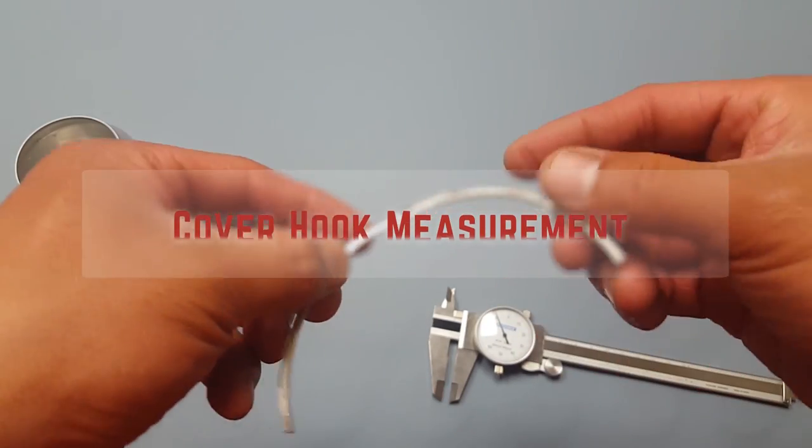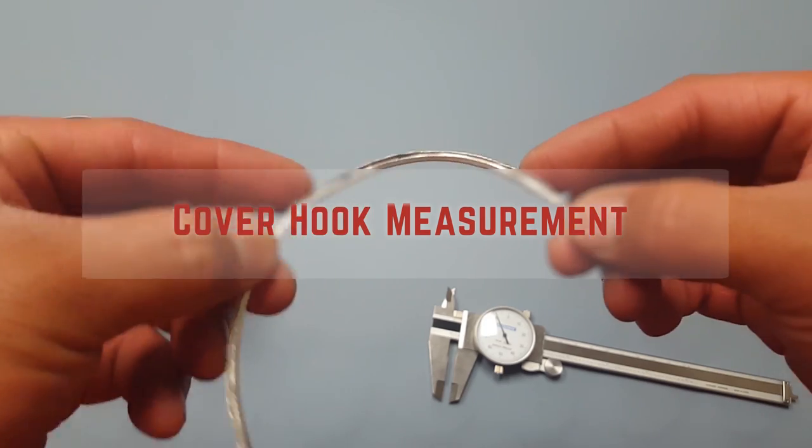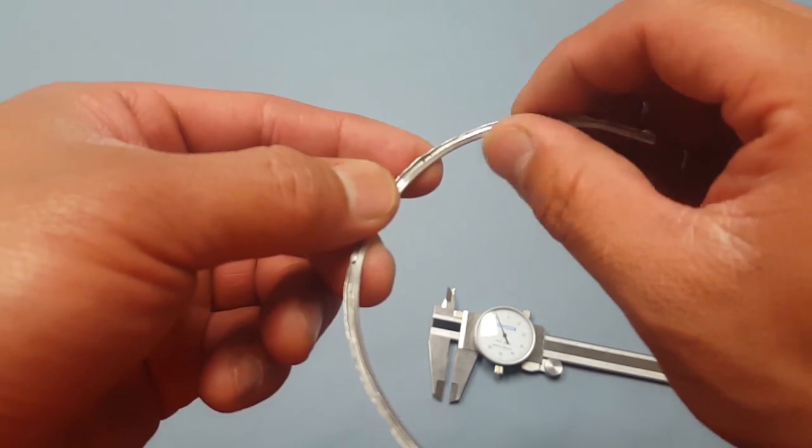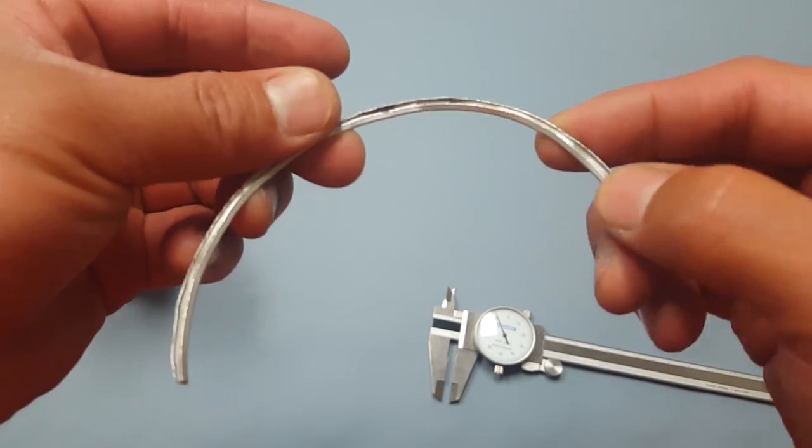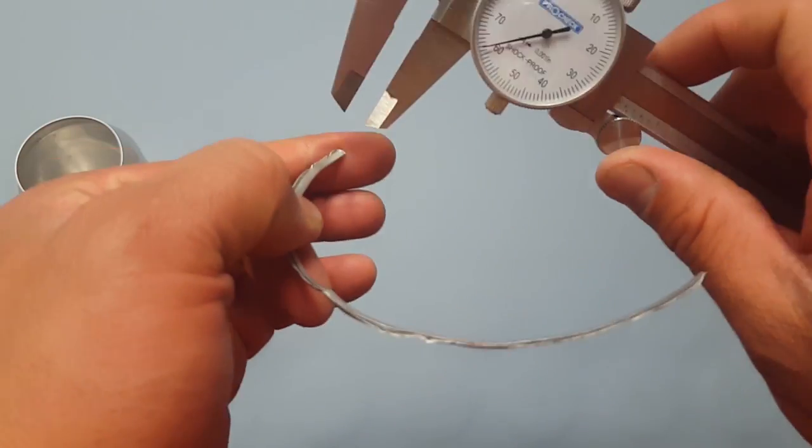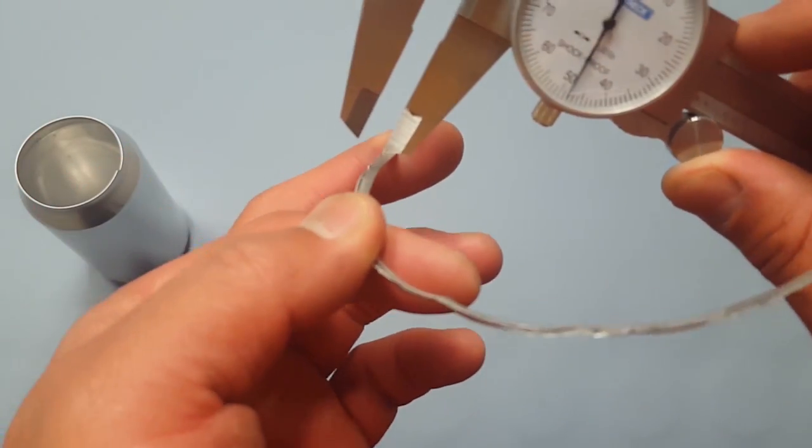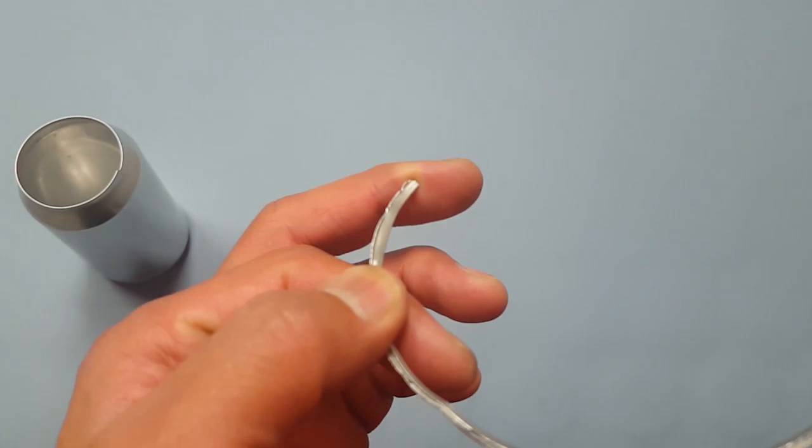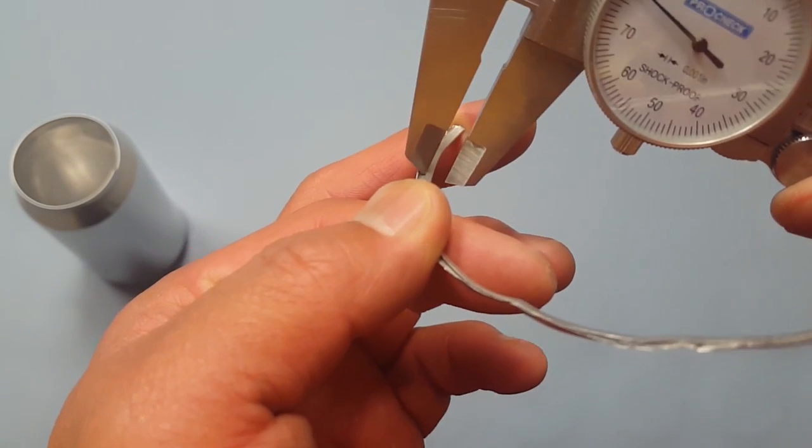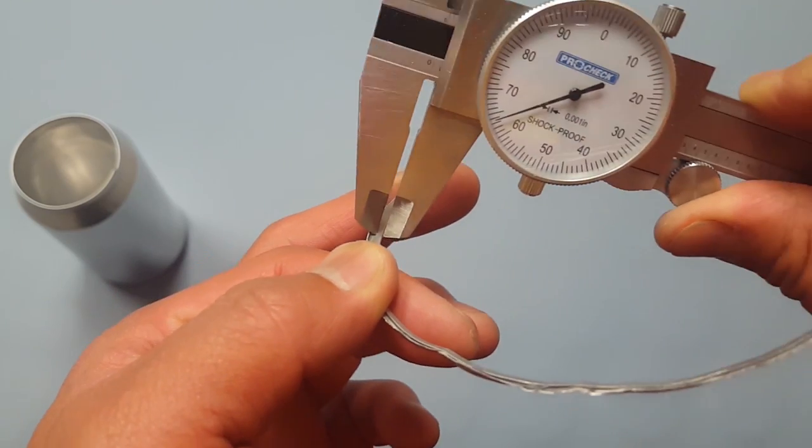Then you can move into your cover hook. Ball specifies the cover hook to be a minimum of 60 plus or minus 5 thousandths. Here you'll have to be very careful to make sure you're grabbing the cover hook, being square on there and getting a good reading.